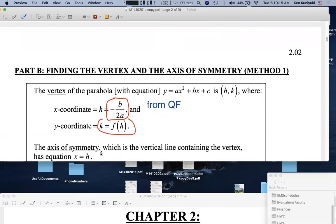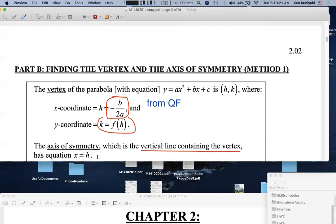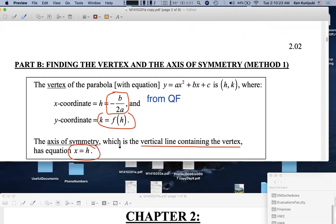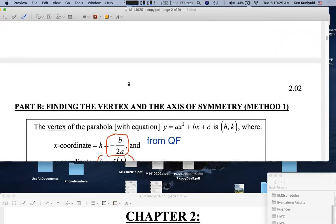The axis of symmetry is the vertical line containing the vertex. So it has equation x equals h. Instead of memorizing that, look at this picture.